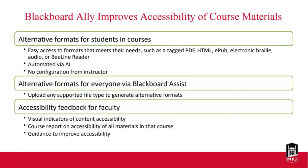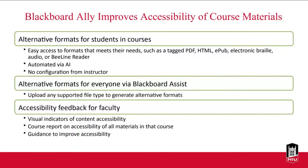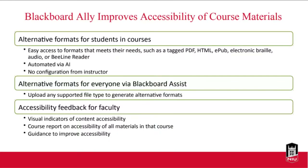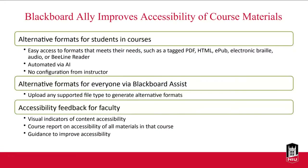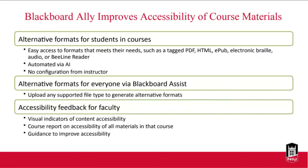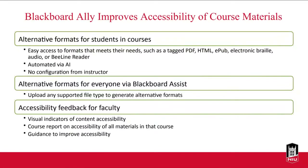Blackboard Ally helps improve the accessibility of course materials. There are alternative formats for students including tagged PDF, HTML, EPUB, electronic Braille, audio, and Beeline Reader — with easy access and no configuration needed from the instructor. Via Blackboard Assist, you can upload any supported file type to generate alternative formats for yourself or others. Ally also provides accessibility feedback: visual indicators for content accessibility, a course accessibility report, and guidance to improve each course file.